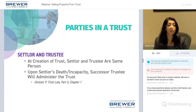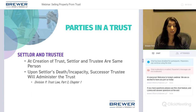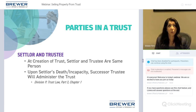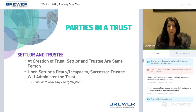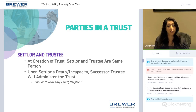The settlor is also the trustee, and we don't really have a successor trustee until the original settlor is incapacitated or passes. In Harry and Wendy's situation, they are both settlors and trustees. When Harry passes, Wendy becomes the sole trustee. Upon her incapacity or passing, whoever they have named in the trust will then take over and administer.